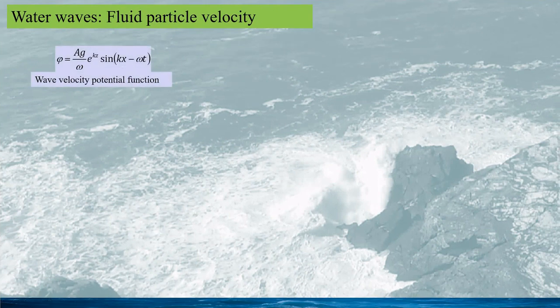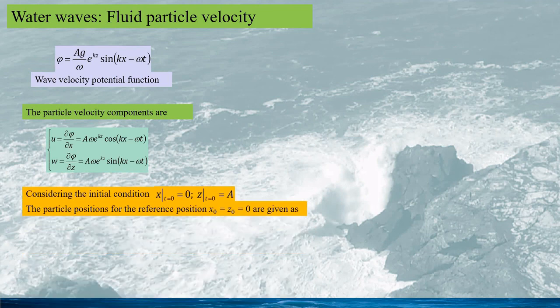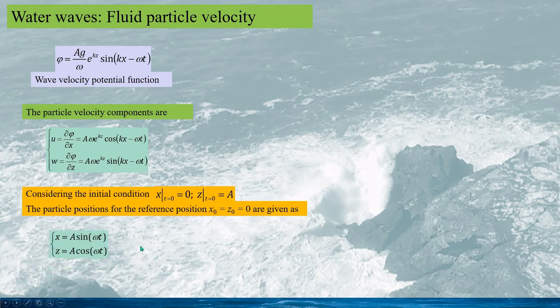From the wave velocity potential function, the water particle velocity components are calculated. Based on these velocity components, we can calculate the water particle motion. For instance, consider the water particle on the free surface, which corresponds to the reference position x and z equal to zero, and the initial condition x equals zero and z equals A. We can then have the water particle position x and z given by the resulting equations.